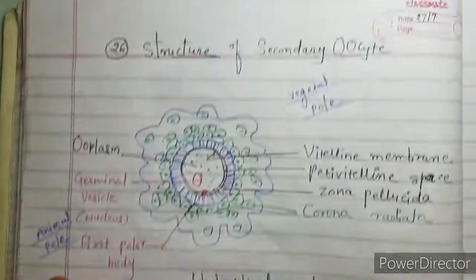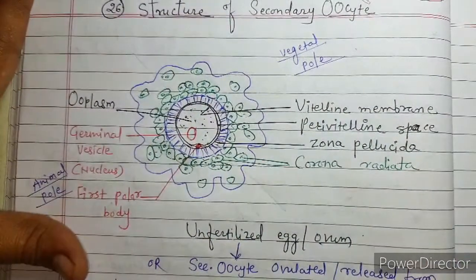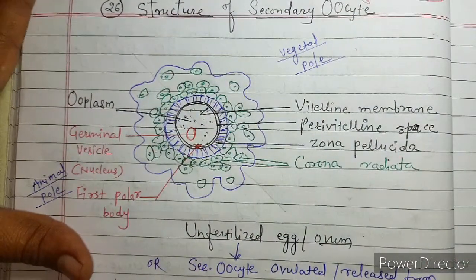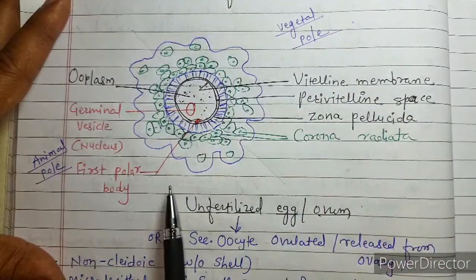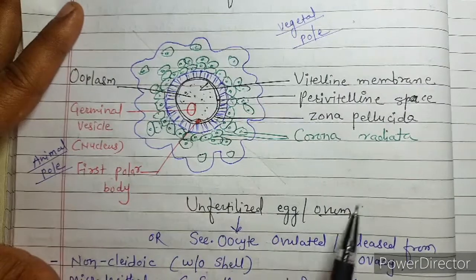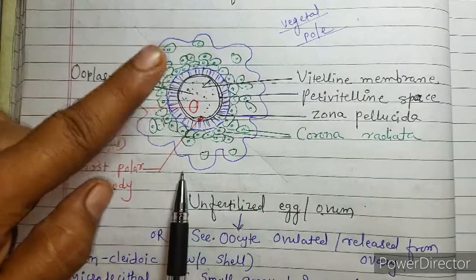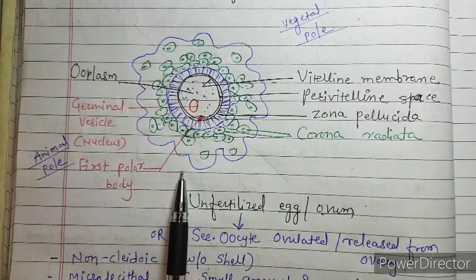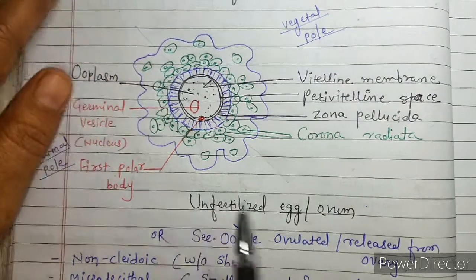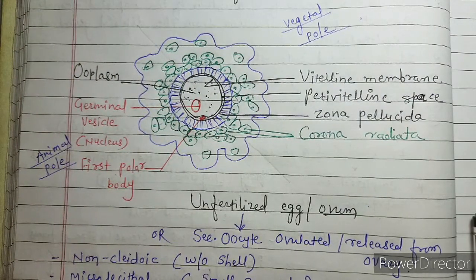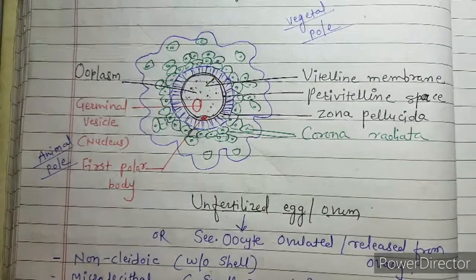This is the structure of the ovum or secondary oocyte — one and the same. This diagram can be asked as: sketch and label the secondary oocyte, sketch and label the ovum, or sketch and label the unfertilized egg. This is the female gamete. If you like such videos, please like, share, and subscribe to my channel.